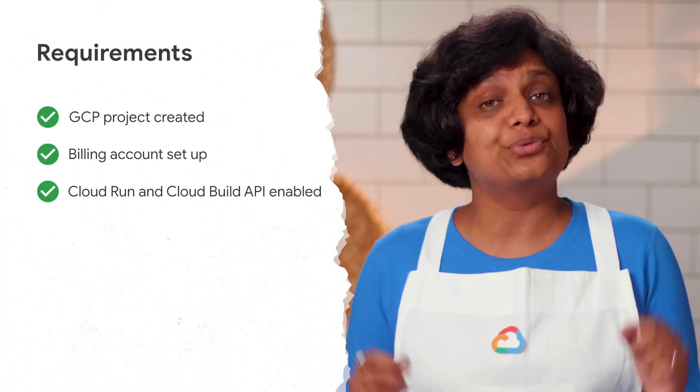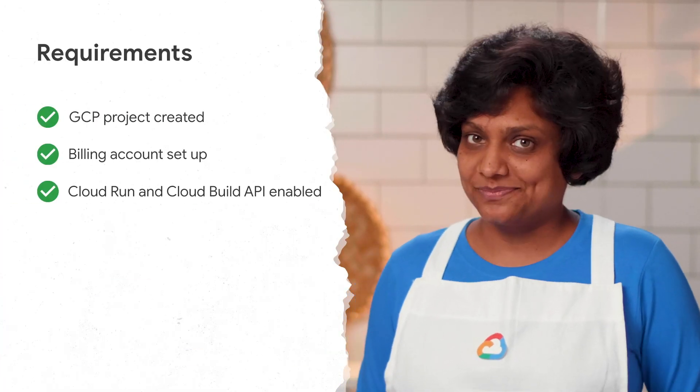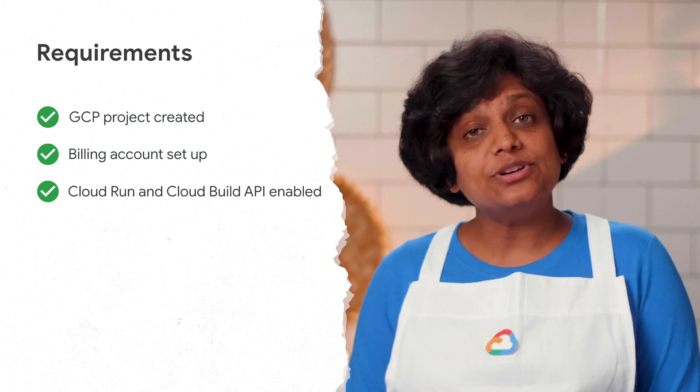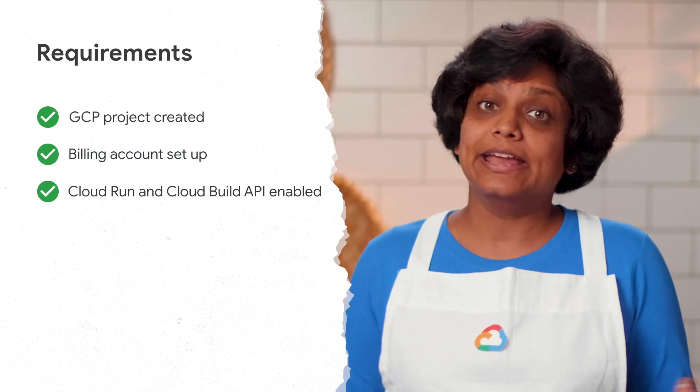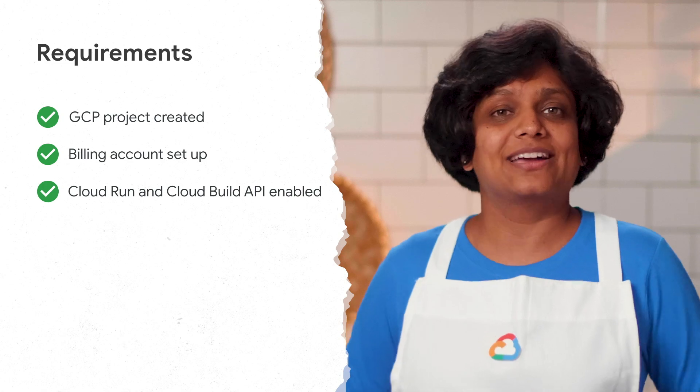So let's see how to build a website with Cloud Run. First, our setup logistics. Identify or create a GCP project that you would like to use. Make sure that the billing is enabled. Enable the Cloud Run and Cloud Build APIs. If you don't have the Google Cloud SDK installed, today's your day — go ahead and get that.